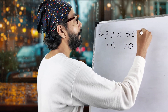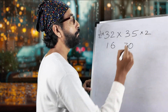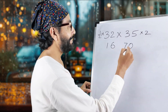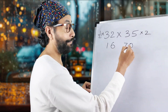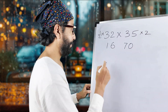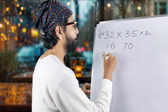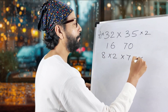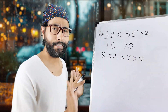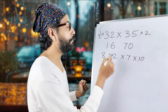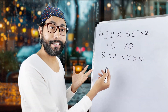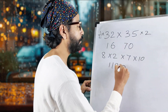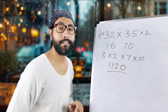Half and 2. So, 16 multiplied by 70. We are not going to do it that way. Instead, 8 multiplied by 2, and 7 multiplied by 10. So 8 sevens are 56. Double of 56 — 1, 1, 2, 0. So 1120 is your answer.